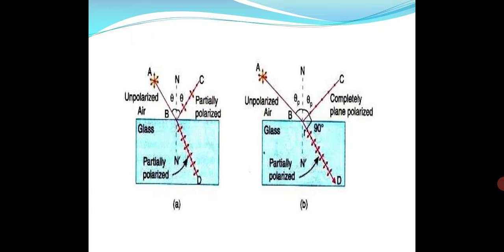When we adjust the angle of incidence such that the angle between the reflected and refracted ray is 90 degrees, then at that angle we get completely polarized light at reflection. The refracted light has a different plane of polarization, perpendicular to the reflected light's plane of vibration. Both reflected and refracted rays are plane polarized with orientations perpendicular to each other.